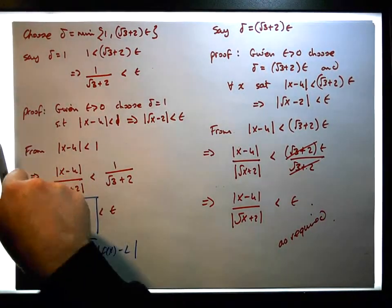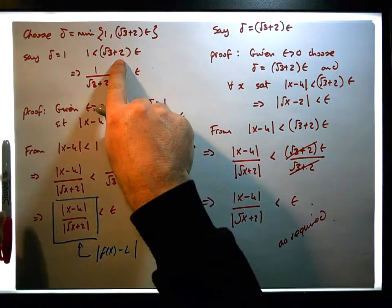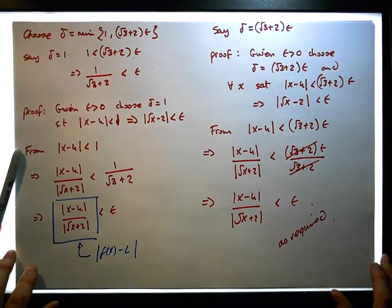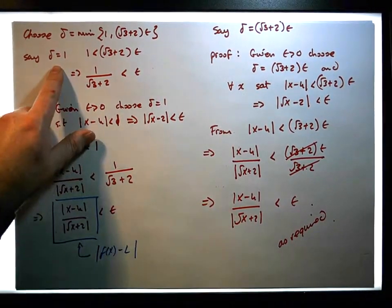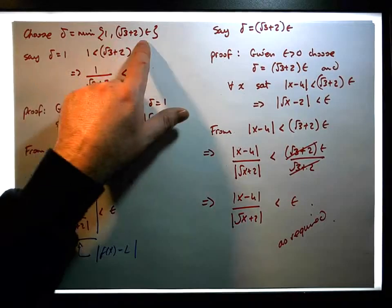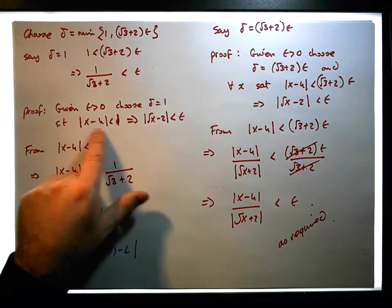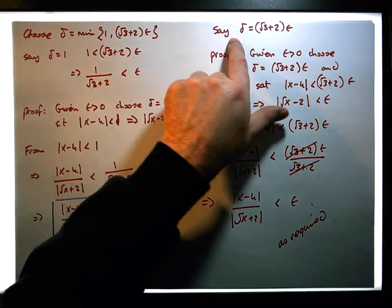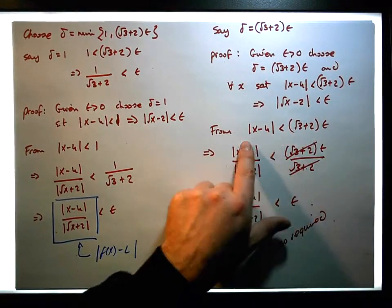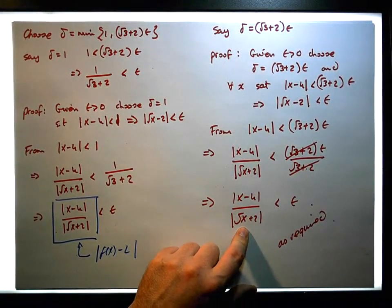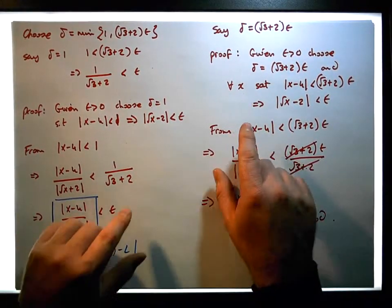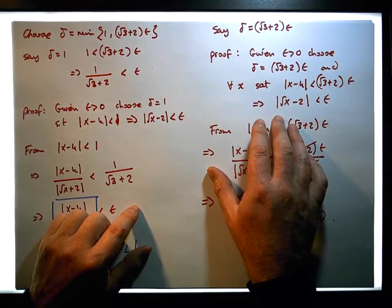A little bit tricky this was, because we ended up with a multiple of epsilon that seemed pretty nasty looking — the square root of three plus two. But that's the choice of delta we need. What we've seen is that in both cases, when we choose delta to be the minimum of those two possibilities, we can take our premise and deduce our conclusion. It works for both cases, and hence the limit of the square root of x as x tends to four must actually be equal to two.